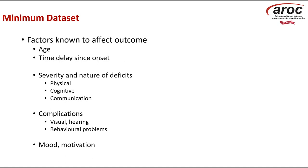There are some factors known to affect the outcome: age, time delay since onset of rehabilitation, severity, and nature of the deficits — particularly physical, cognitive, and communication. Like the FIRM, we know there are some complications in scoring if you're looking at visual and behavioral problems for some of the people we score these measures on. It also looks at mood and motivation.